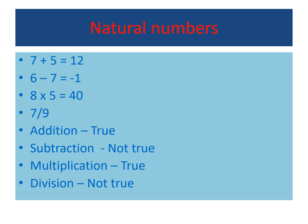For natural numbers: 7 + 5 = 12 (natural number), so addition is closed. 6 − 7 = −1, so subtraction is not closed. Multiplication is true. Division gives a fractional number, so it is not closed. For natural numbers: addition — true; subtraction — not true; multiplication — true; division — not true.